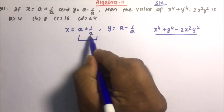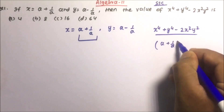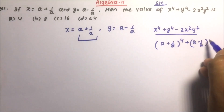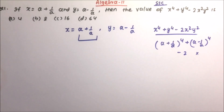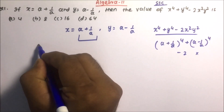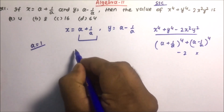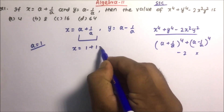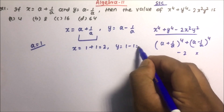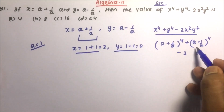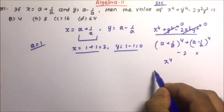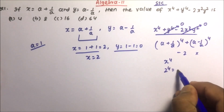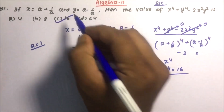Now, one approach is to expand (a + 1/a)⁴ + (a - 1/a)⁴, but this will become very lengthy and you won't be able to find the answer within two minutes. Instead, using the shortcut method: suppose a = 1. Then x = 1 + 1 = 2 and y = 1 - 1 = 0. Every term with y becomes 0, so you only need to calculate x⁴ = 2⁴ = 16. This is how you solve the problem quickly in the exam.